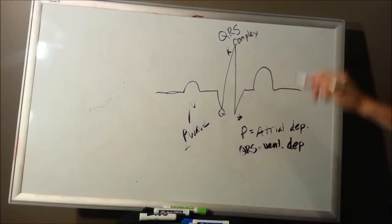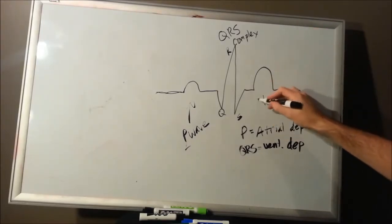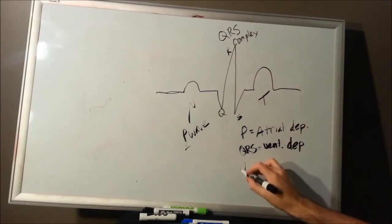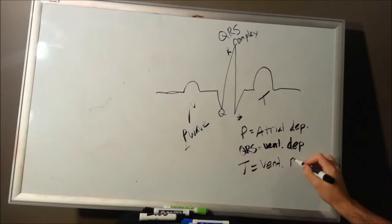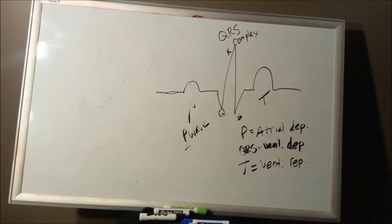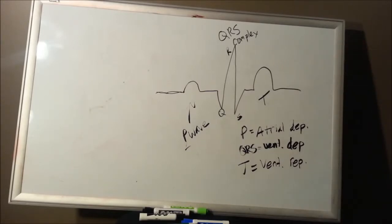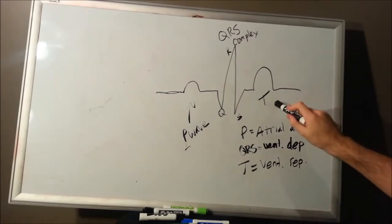Then you've got a second hump, which is your T wave. Your T wave represents ventricular repolarization, corresponding to phase 3 of the action potential cycle — when potassium is going out and the cell resets. Repolarization occurs from the epicardium to the endocardium.